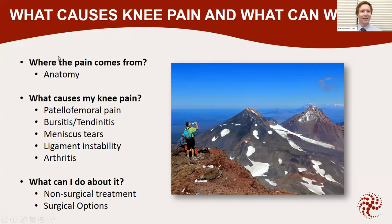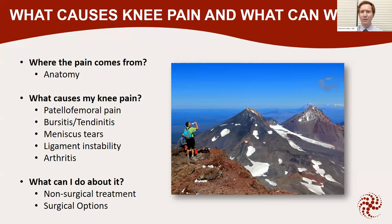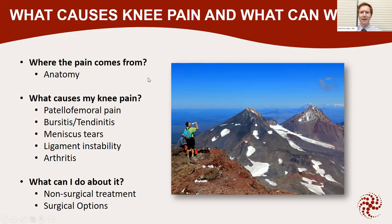We're going to go through the common diagnoses that affect the anatomy of the knee, and we'll do a little bit of talking about the basic structures of the knee, just to give this talk relevance. We'll be going through patellofemoral pain, bursitis, which is also common in the knee, meniscus tears, ligament tears, which are often common with a lot of the sports we participate in here in Central Oregon, and then knee arthritis, which is a very common diagnosis. We'll talk about both non-surgical treatment and surgical treatment options.